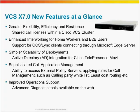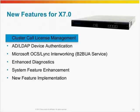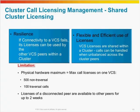Let's look into the cluster call license management. With the new feature — shared cluster licenses — you will gain more resilience and a more flexible solution for all your call licenses. The call licenses can now be used for two weeks on another pair in a cluster if a pair goes down. This will normally be more than enough time to perform maintenance or wait for a replacement. The call licenses cannot exceed more than 500 non-traversal and 100 traversal call licenses per pair in a cluster, as this is limited in the VCS hardware. All pairs in a cluster know about the other pairs' call licenses, and if one fails, those licenses will be available to all pairs in the cluster.